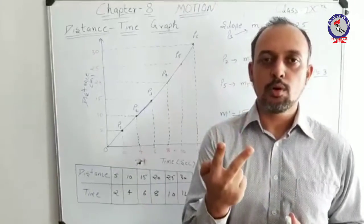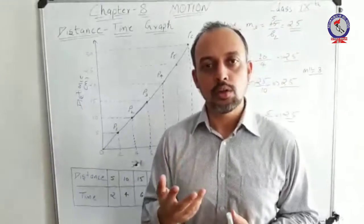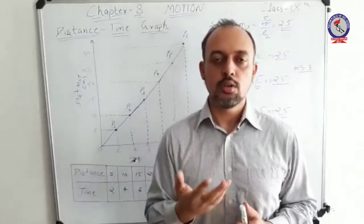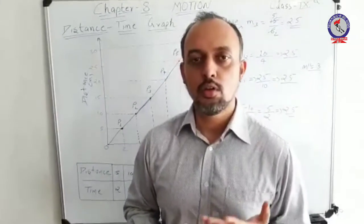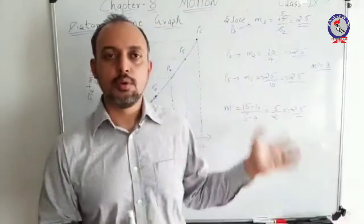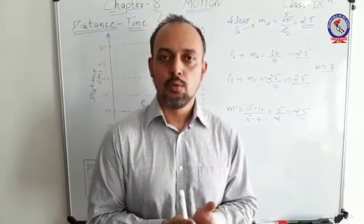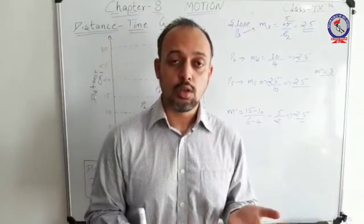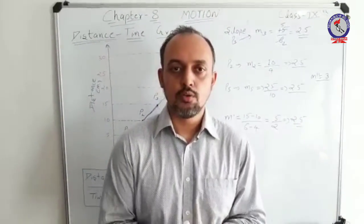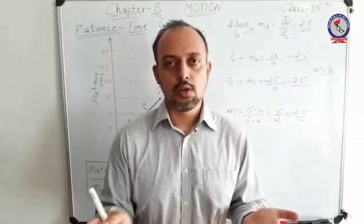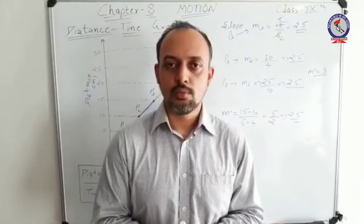The second important point is that with the help of slope, you can also determine whether the given kind of motion is uniform or non-uniform. Similar values of slopes represent uniform motion, while dissimilar values represent non-uniform motion. This was the whole logic and concept of the distance-time graph.